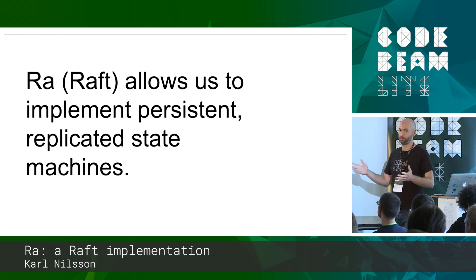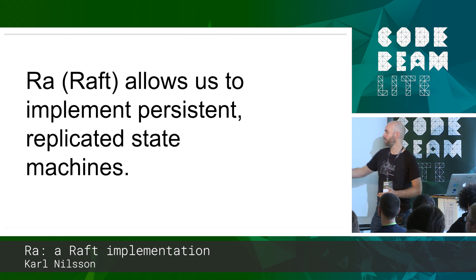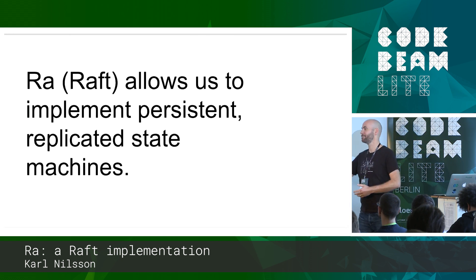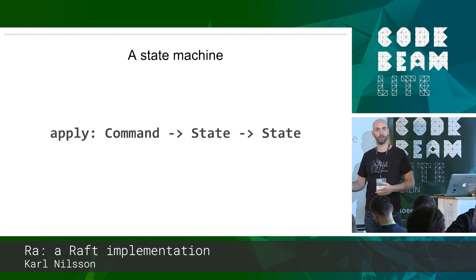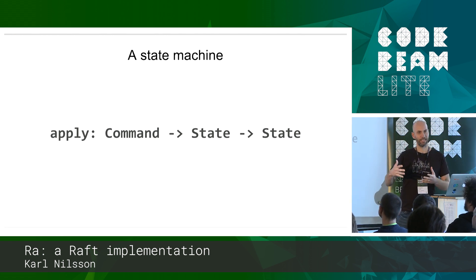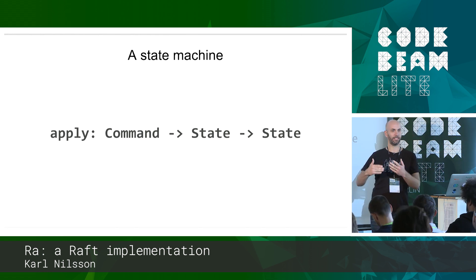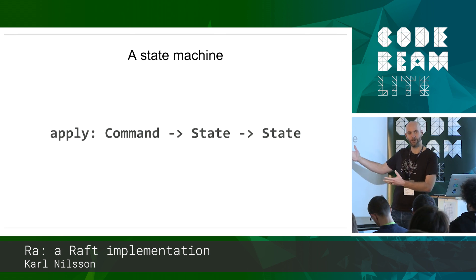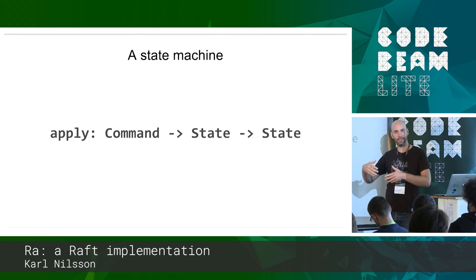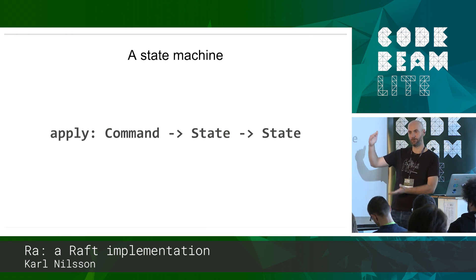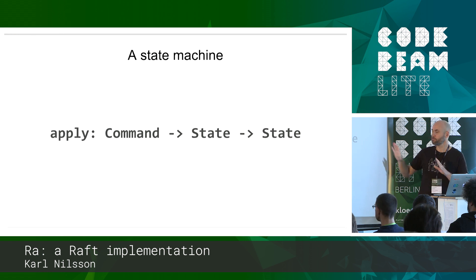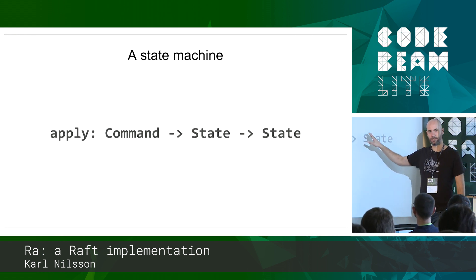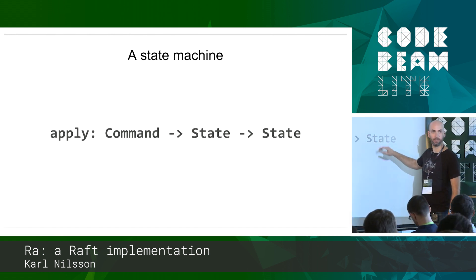Ra, by virtue of being a Raft implementation - we're not inventing anything new here - allows us to implement persistent, replicated, and fault tolerant state machines. When we talk about a state machine in the context of Ra and Raft, we're not really talking about a GenStatem kind of state machine where you've got a fixed set of named states that you move between. It's more like a left fold, where you have a command and a state, you apply it, and you return a new state, and you do that to a sequence or log of entries. It's an apply function with two arguments returning a state.